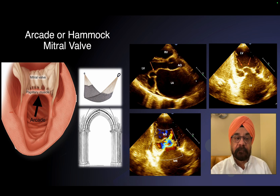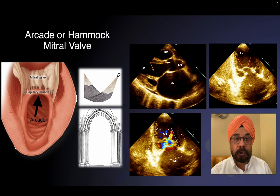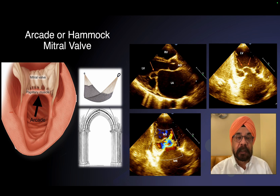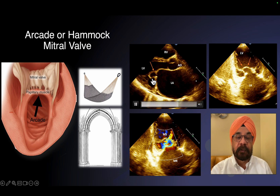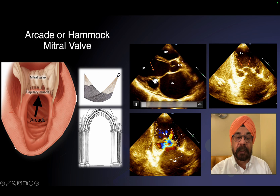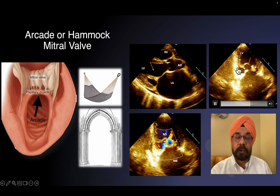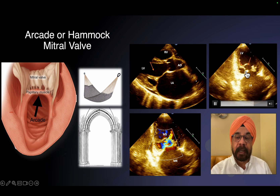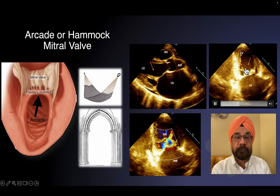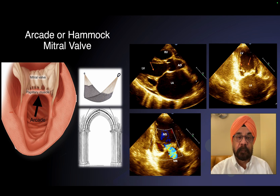What is a hammock and arcade mitral valve? Basically, there is a fusion of the papillary muscles, fusion of the chordae — chordae can be short, chordae can be irregular — and the chordae and subvalvular apparatus can insert proximally rather than going towards the apex. Look at this case: this is the mitral valve making an arcade or hammock. This is a short papillary muscle, the chordae are fused with each other. On a four-chamber view, you see a short, grossly abnormal papillary muscle attached quite proximally rather than at the mid and apical part of the LV, and you see this doming of chordae fused with each other. It's called a hammock valve and it produces mitral stenosis and mitral regurgitation.